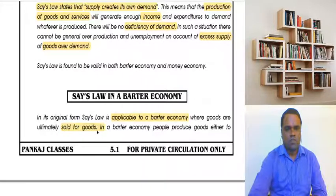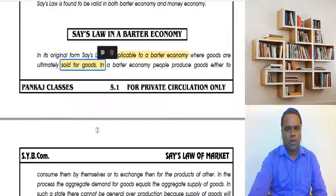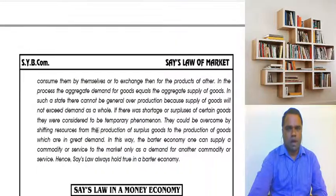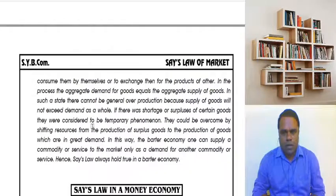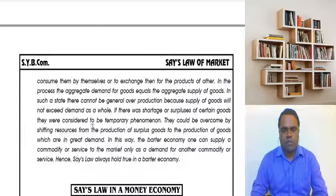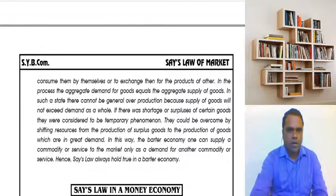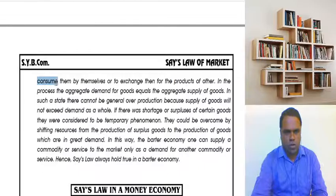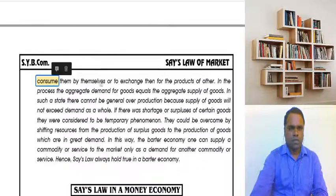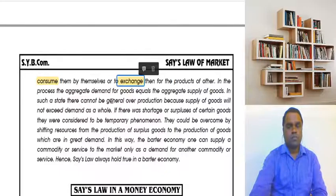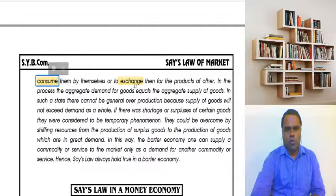In a barter system, for example, a farmer grows rice and a potter makes clay pots. When people produce things, they have two aims: either they want to consume the product themselves, or they want to exchange it with someone else. So either they want to consume or they want to exchange. This means aggregate demand for goods will always be equal to aggregate supply of goods.